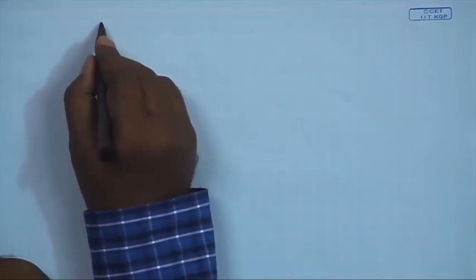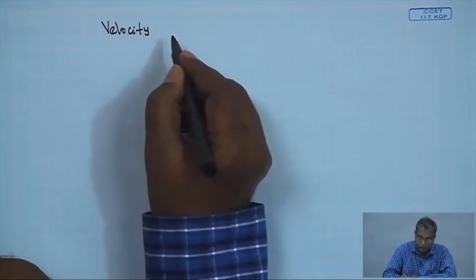Before discussing other variants of the solution diffusion model, we introduce the velocity variation technique. In an earlier class, we noted two experimental methods to estimate real retention. We have already seen one method; now we look at the velocity variation technique, which uses the film theory model to estimate the real retention of the membrane.